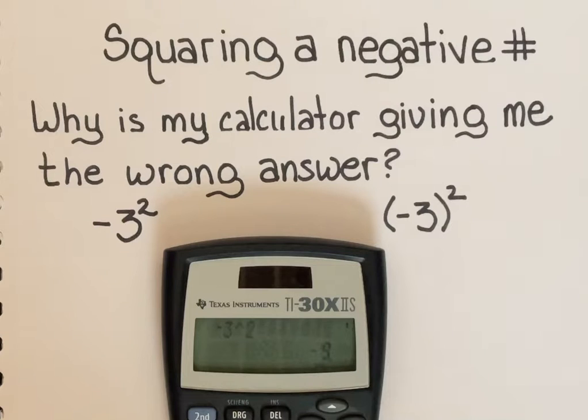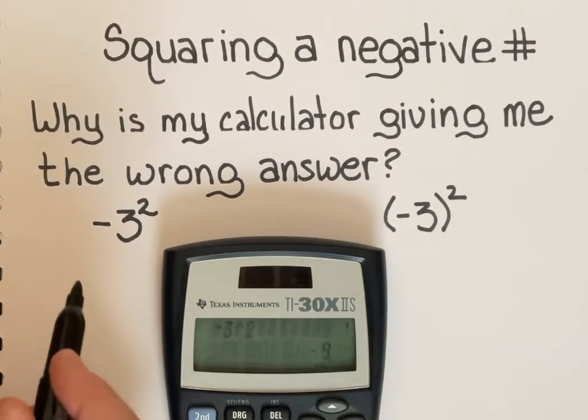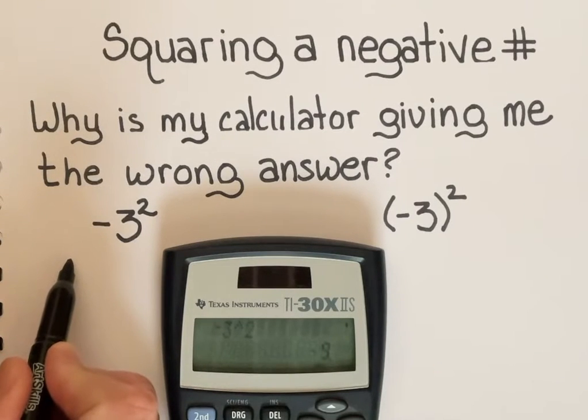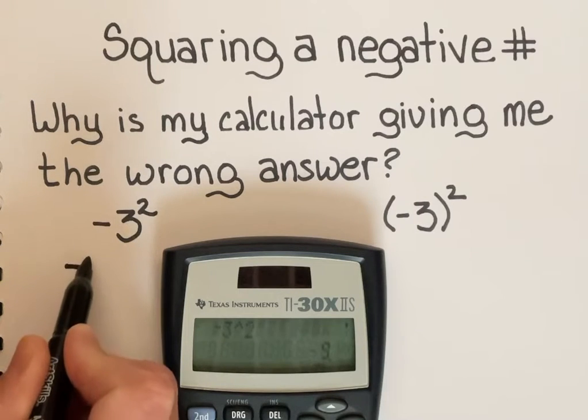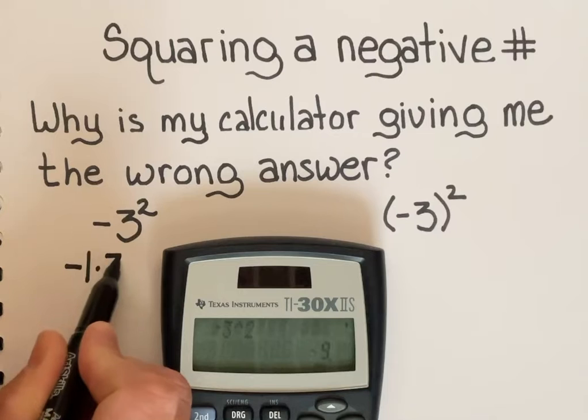We know that negative 3 multiplied by negative 3 is positive 9. When you type in negative 3 squared, what's happening is your calculator is following order of operations.